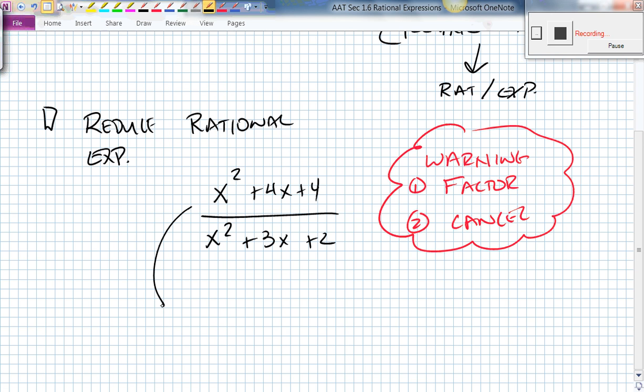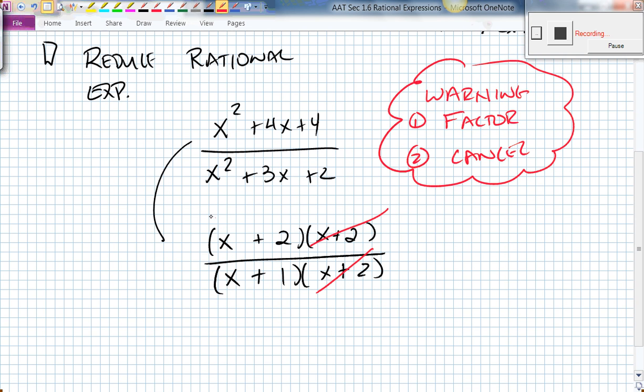The top factors to a product of two binomials over a product of two binomials. So I'll have x and x, 2 and 2, plus, plus, then x and x, 1 and 2, plus and plus. Now I can see that these can cancel out because I have a product of two binomials that I'm multiplying together. Therefore, my answer is x plus 2 all over x plus 1.